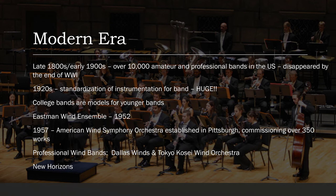In 1957, the American Wind Symphony Orchestra was established in Pittsburgh. This ensemble is super important because of the huge number of works they commissioned — more than 350 works. They would actually float up and down the rivers on a barge and play their concerts, which is kind of fun.